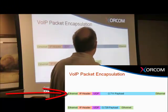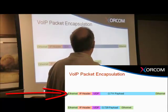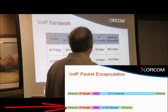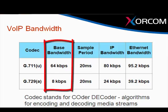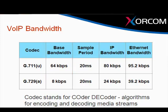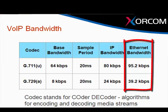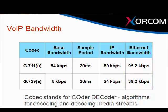Here is a G711 packet. Here is a G729 packet. If you add up all the numbers, you'll see that the base bandwidth is 64 kilobits per second versus 8 kilobits per second. You've got some header information and your total bandwidth. Adding the numbers up, you've got 95.2 versus 40 kilobits per second with the same traffic — a lot smaller packet that you can fit into the stream.